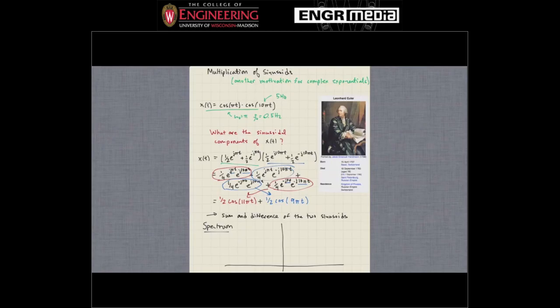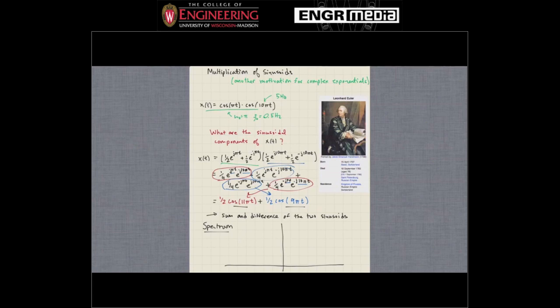We see how we can use Euler's identity to forget all these trig identities and easily multiply sinusoids. The final product is a sum of two different sinusoids. The frequencies of those two sinusoids are 5.5 hertz and 4.5 hertz — the sum and difference frequencies of the two original sinusoids.